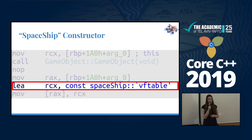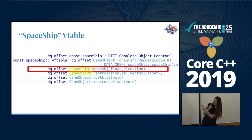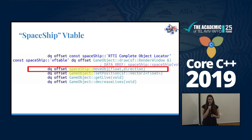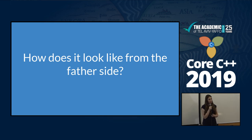The second thing is that we have the Vtable of spaceship assigned to the first eight bytes of RCX. As I mentioned, RCX is usually the register that stores the pointer to the object. This is the spaceship Vtable. As you can see, the Vtable is made of game object functions, but also one spaceship function called 'moveOpt'. This means the object inherits from game object, but there is a virtual function created in the parent that was changed here in spaceship.